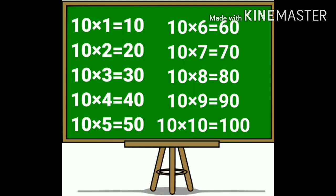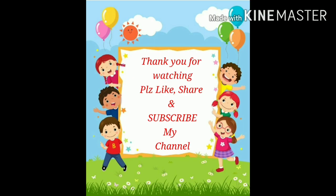Again: ten ones are ten. Ten twos are twenty. Ten threes are thirty. Ten fours are forty. Ten fives are fifty. Ten sixes are sixty. Ten sevens are seventy. Ten eights are eighty. Ten nines are ninety. Ten tens are hundred. Thank you for watching.